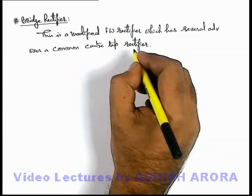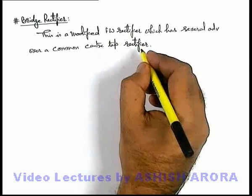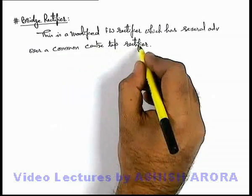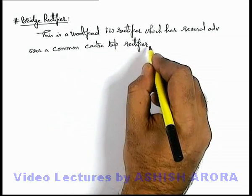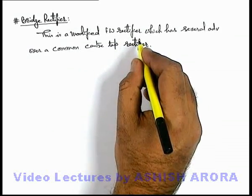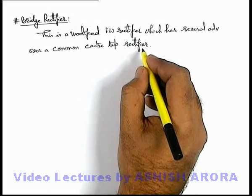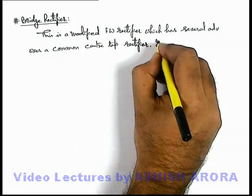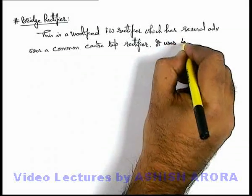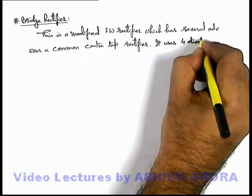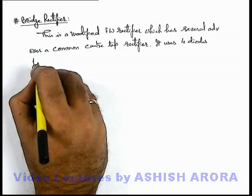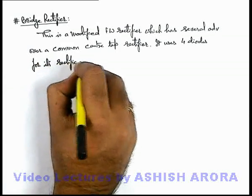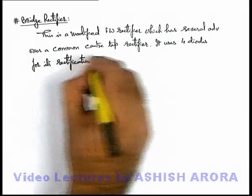The center tap full wave rectifier we've already studied in the previous sections. In a center tap rectifier we use 2 diodes for full wave rectification. The basic difference between the two is that in a bridge rectifier it uses 4 diodes for its rectification mechanism.